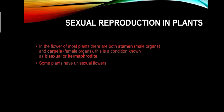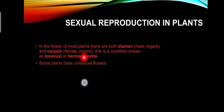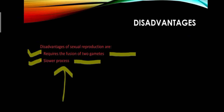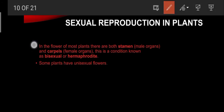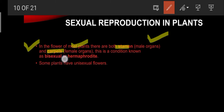In sexual reproduction in plants, most flowers have both stamens, which are the male organs, and carpels, which are the female organs. This condition is known as bisexual or hermaphrodite. However, some plants also have unisexual flowers.